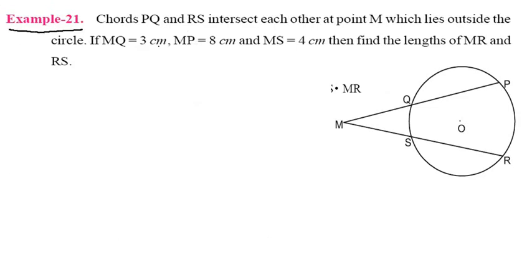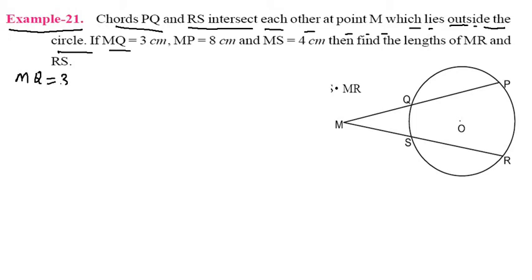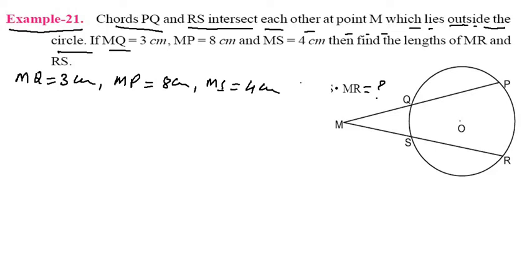Example 21: Chords PQ and RS intersect each other at a point M which lies outside the circle. MQ is given as 3 centimeters, MP equals 8 centimeters, and MS equals 4 centimeters. Find the value of MR and RS.